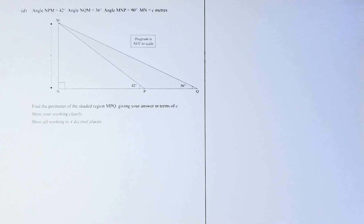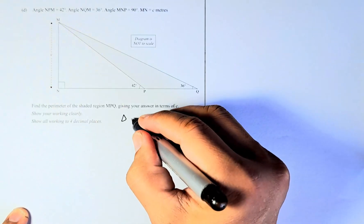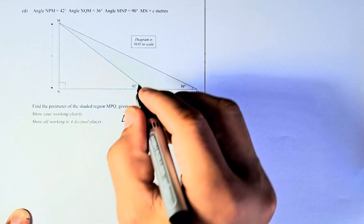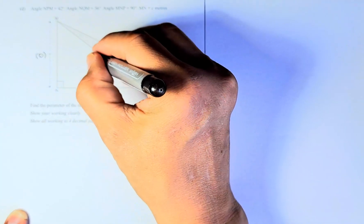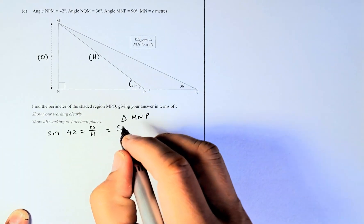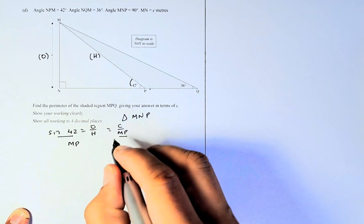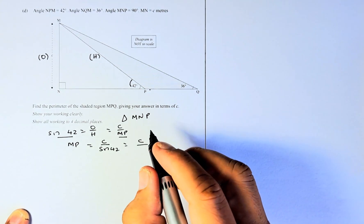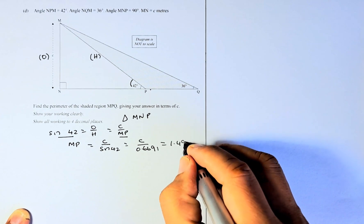We are going to find lengths using SOHCAHTOA. Starting with the white triangle MNP, we're going to find MP. C is the opposite side and MP is the hypotenuse. So sine 42 equals O over H, where O is C and H is MP. Rearranging, MP equals C divided by sine 42. Sine 42 is 0.6691, so MP equals 1.4945C.